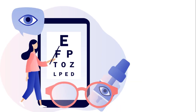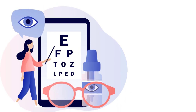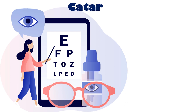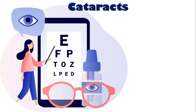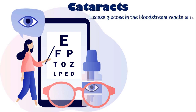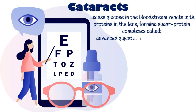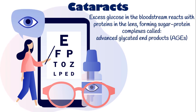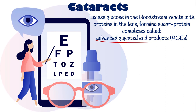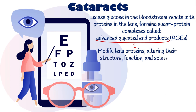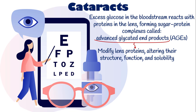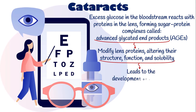If diabetic lens edema is left uncontrolled for prolonged periods, it can contribute to the development of cataracts through other mechanisms. Excess glucose in the bloodstream reacts with proteins in the lens, forming sugar-protein complexes called advanced glycated end products. Advanced glycated end products can modify lens proteins, altering their structure, function, and solubility. This modification can affect the transparency and refractive properties of the lens, leading to the development of cataracts.